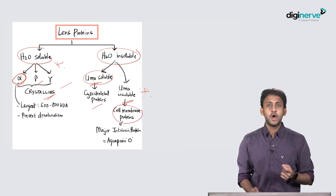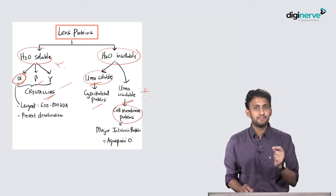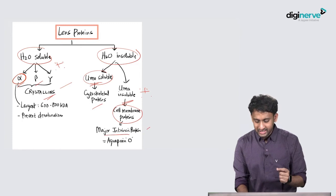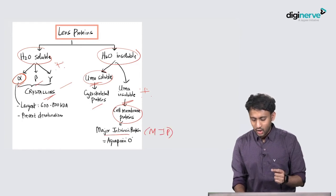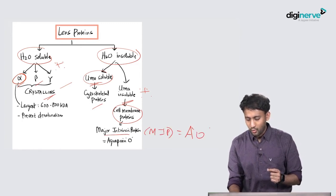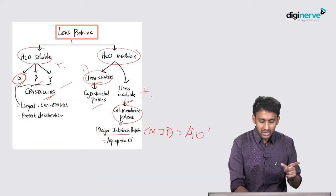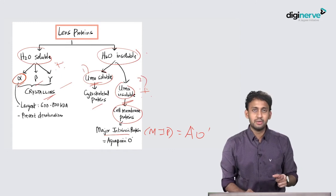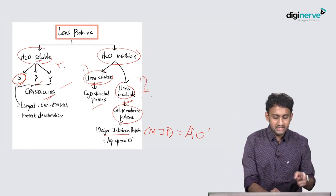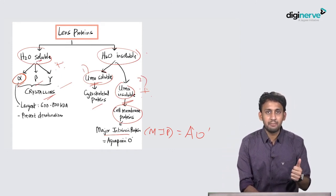A very important thing to consider is the major intrinsic protein, which you call aquaporin O or aquaporin zero. The water soluble ones are alpha, beta, gamma, what we together call the crystallines.